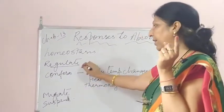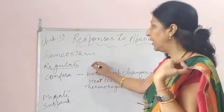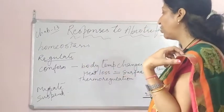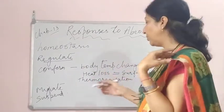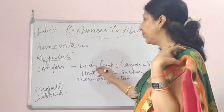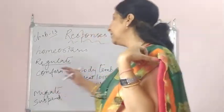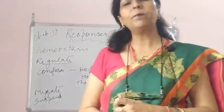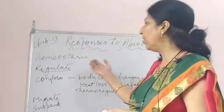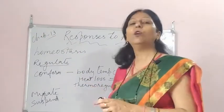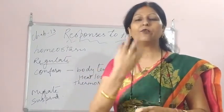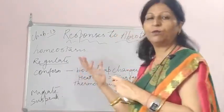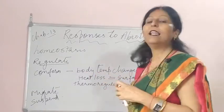To recap these four R's — Regulate, Conform, Migrate, and Suspend: Regulators are mammals like us; Conformers are organisms whose body temperature keeps fluctuating with the environment. A common exam question is: why have conformers not become regulators over all these years? It is also worth noting that in a sense we too adapt by sweating and shivering.